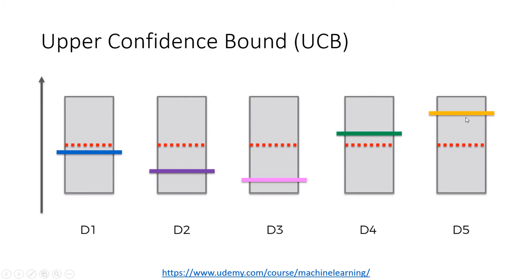We don't know these color lines. We have these boxes — these boxes are the confidence intervals. This is the observed average, and this is the expected value of that distribution that we are going to try to reach. By the law of large numbers, with enough samples, we converge towards the actual value of the distribution.